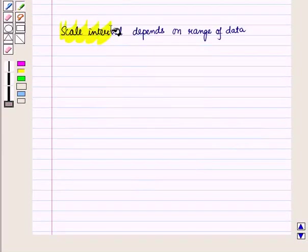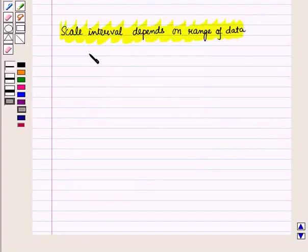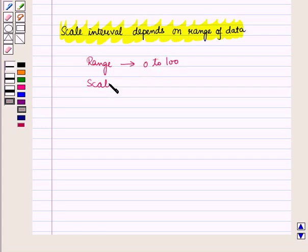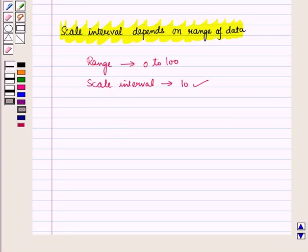Scale interval depends on the range of data. If the range of data is from 0 to 100, then a scale interval of 10 would be appropriate rather than choosing a scale interval of 5 or 25.